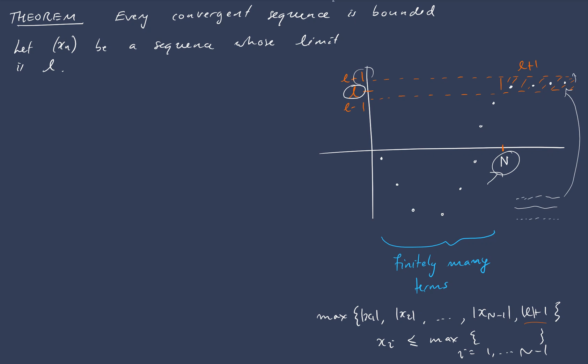So we know that there exists a natural number N such that if n is greater than or equal to N, then the absolute value of Xn minus L is less than 1. Okay, so remember, 1 was our arbitrary choice of epsilon. So 1 is just convenient. We could have chosen anything else we liked, but 1 seems kind of tidy.